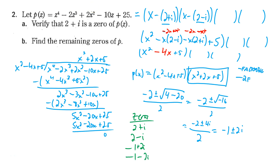If you graph this it actually would have no zeros — it looks like it'd probably be all above the x-axis with no real zeros at all, but there are four complex zeros. Our last two factors would be x minus (negative 1+2i) and x minus (negative 1-2i).